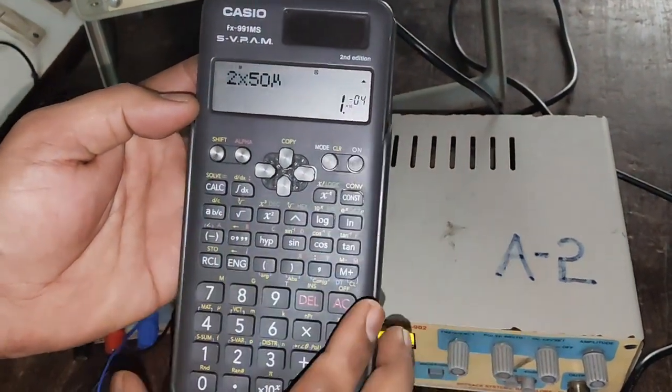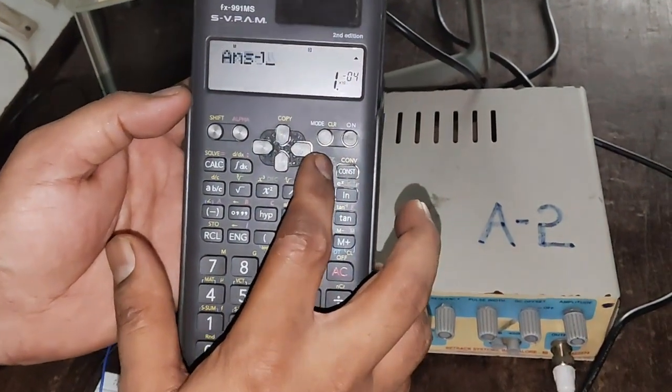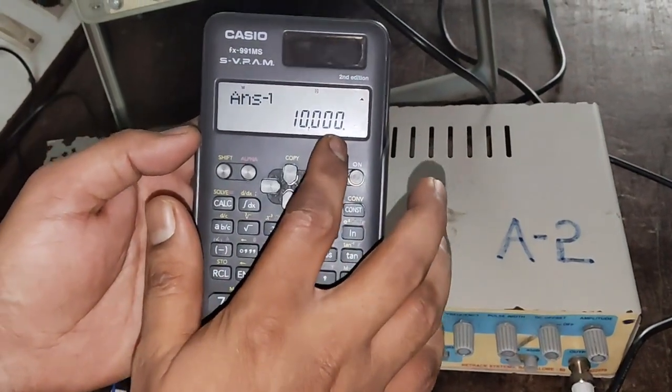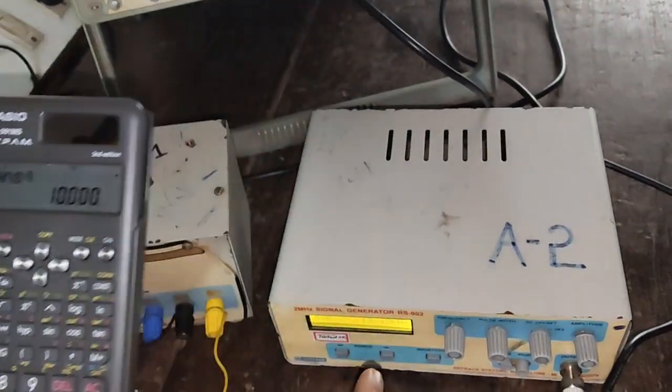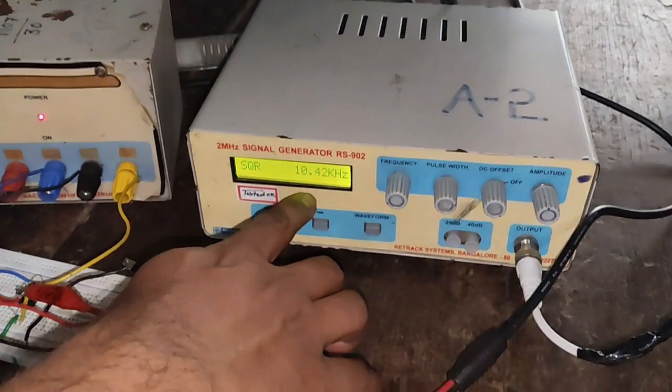That is 1 into 10 to the power of minus 4. If I make reciprocal of it that turns out to be 10 kilohertz. The same frequency we have applied from the function generator.